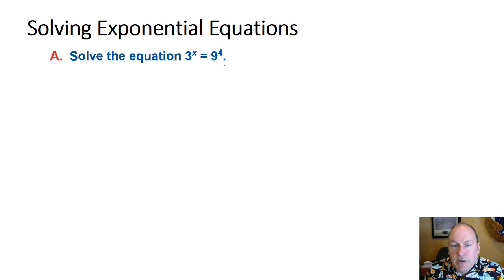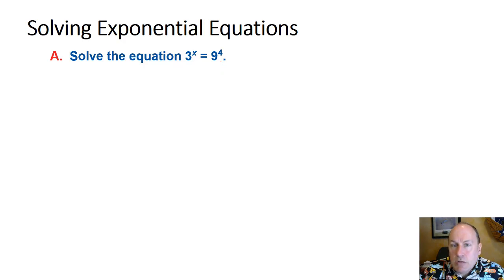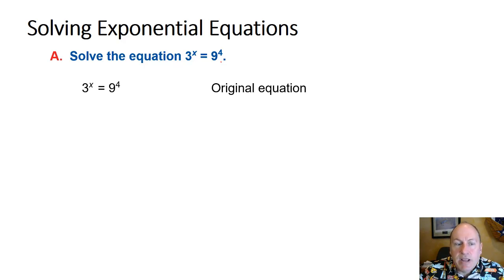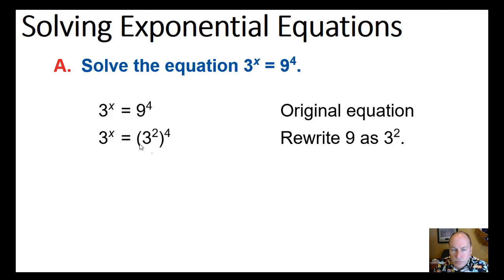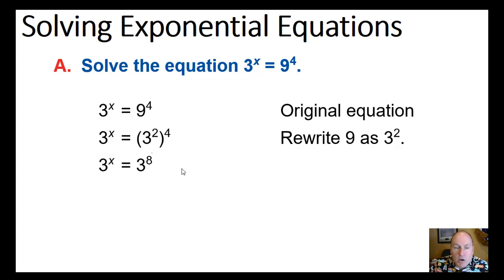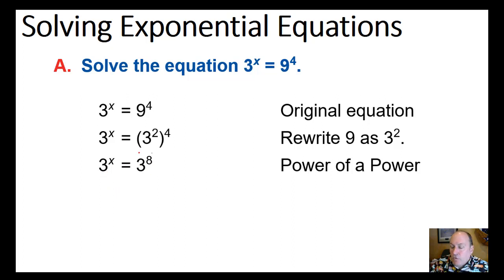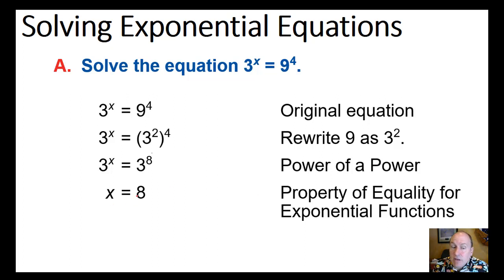Let's look at 3 to the x equals 9 to the 4th power. It's important to note that the previous property is only true if the bases are equal, so we've got to turn 9 to the 4th into a common base. We can rewrite 9 as 3 to the 2nd. Once we've done that, we have 3 to the x equals 3 to the 2nd, all raised to the 4th power. Using the power-of-a-power property, that becomes 3 to the 8th. So now 3 to the x equals 3 to the 8th, and therefore x must equal 8.